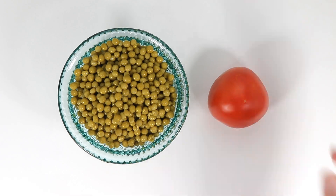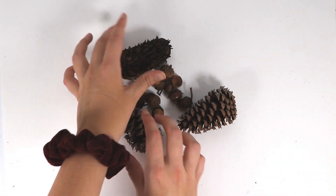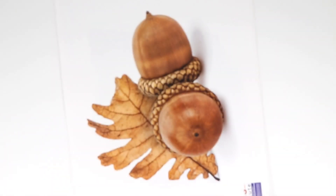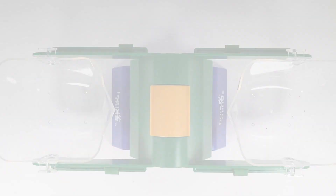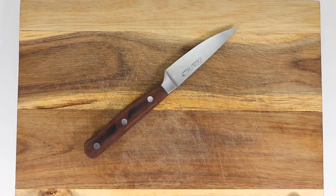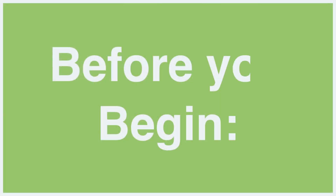Edible seeds to explore, which are tomatoes and peas. Non-edible seeds including acorns, dandelions, winged seeds, and seasonal seeds. A 3x5-inch photograph of each of the non-edible seeds presented. Magnifying glasses, balancing scales, bowls and plates, napkins, a cutting board and knife, science journals, and coloring and writing utensils.